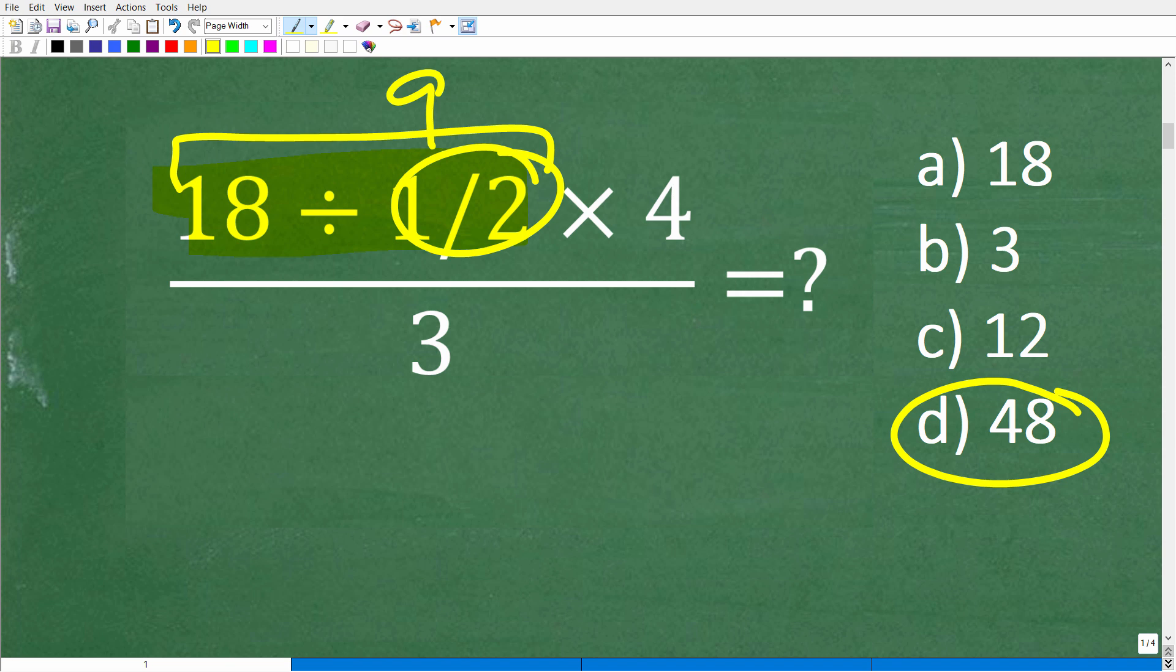So now you have 9 times 4 over 3. And then someone might say, well, I have a 9 up here. I can take this 3 and divide it into that 9. So now I have 3 times 4, which of course would be 12.